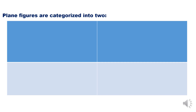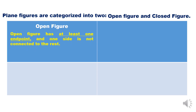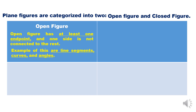Plane figures are characterized into two types: open figures and closed figures. An open figure has at least one endpoint, and one side is not connected to the rest of the lines. Examples of open figures are line segments, curves, and angles.